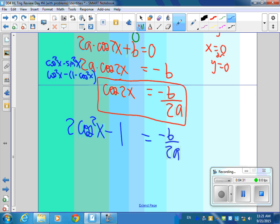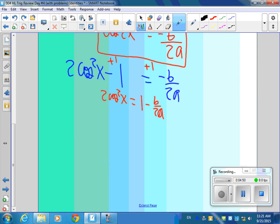So now just solve the rest of the way. 2 cosine squared x equals, add 1 to both sides, 1 minus b over 2a. And then divide by 2. I get 1 over 2 minus b over 4a.